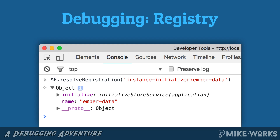You'll click the dollar sign E thing in the top right corner, which assigns that object to a global so you can access it in the console. Then we can call the resolve registration method on it. Here you can see that I'm reaching into the registry and grabbing an instance initializer, and what I get back looks very similar to what one would export in an instance initializer file.